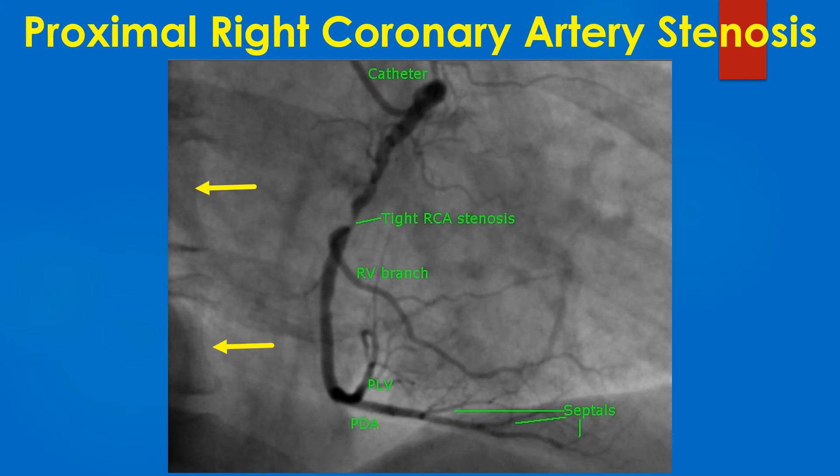When this vessel is being dilated during coronary angioplasty, the tight segment will be dilated first. Several septal branches arising from the PDA can be seen well in this view. In fact, the identification of the PDA in a coronary angiogram is by the septal branches which arise from it.